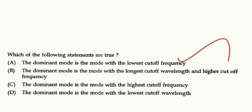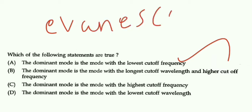We must also remember another definition: the evanescent mode. Evanescent mode means, for a mode with frequency less than the cutoff frequency, the field components will decay exponentially and the wave cannot propagate through the waveguide. That mode is called evanescent mode. It has a frequency less than cutoff frequency, which leads to the decay of the field component, and hence the wave cannot be propagated.